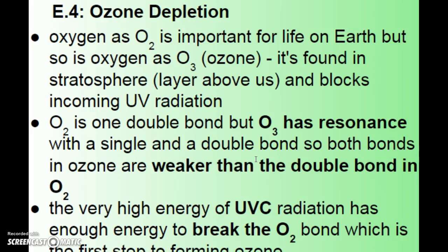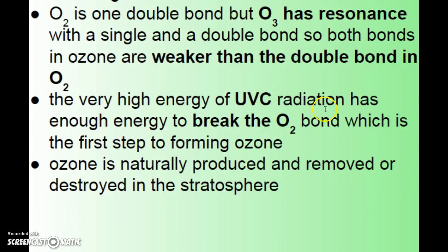But up in the stratosphere, O3 is very necessary because it has a single bond and a double bond with the three oxygens, giving it resonance between that single and double bond — so both bonds in ozone are weaker than the double bond in O2. The high energy of UVC rays is enough to break the O2 bond, which forms ozone. That process up in the stratosphere keeps very high energy UVC from reaching us.